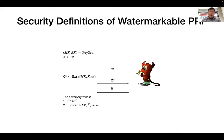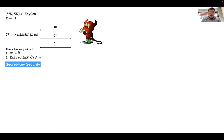We now give a more formal definition of the security of the watermarking scheme for PRF. There are two parties: a challenger and an adversary. The challenger generates a marking key and an extraction key, and also samples a PRF key. The adversary sends a message to the challenger, who embeds the message into the PRF key using the marking key, producing a watermarked circuit C*. The adversary outputs a circuit C̃, and it wins if C̃ is functionally close to C* but the extraction algorithm fails to extract the original message from C̃. In this definition, the adversary learns neither the marking key nor the extraction key — we call this secret key security.